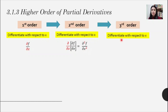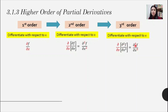For the third order, differentiate with respect to x again. Take the answer of the second order, put it inside the bracket, and write ∂/∂x outside. You can rewrite it as ∂³ — because you have three ∂ symbols — with the 3 between ∂ and f. At the bottom, ∂x·∂x·∂x rewrites as ∂x³, where 3 denotes the third order.